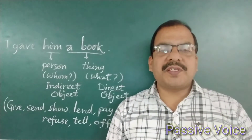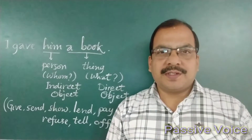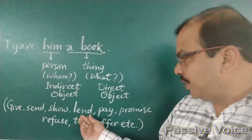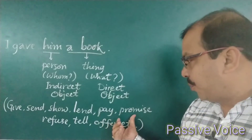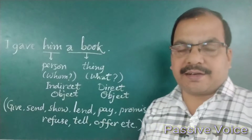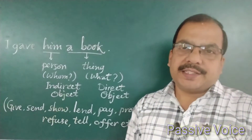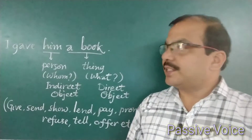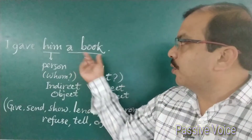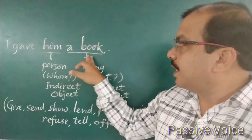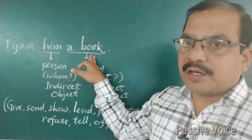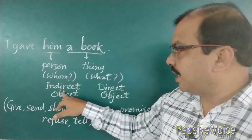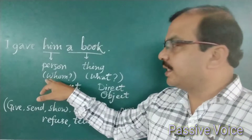There are certain verbs that have two objects — for example: give, send, lend, pay, promise, refuse, tell, offer. Let's take an example: 'I gave him a book.' Here, 'him' is one object and 'book' is another object. 'Book' is called the direct object and 'him' is called the indirect object.